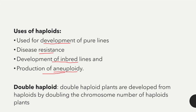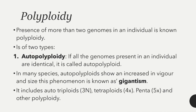Double haploid plants are developed from the haploid by doubling the chromosome number of haploid plants. The next topic is polyploidy — the presence of more than two genomes in an individual is known as polyploid. Polyploids are of two types: autopolyploid and allopolyploid. Autopolyploid means all the genomes present in an individual are identical.